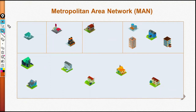Now that we know what a local area network is, there's another bigger network. When a number of local area networks are joined together, they form a Metropolitan Area Network. However, there are restrictions on how far a metropolitan area network can extend.